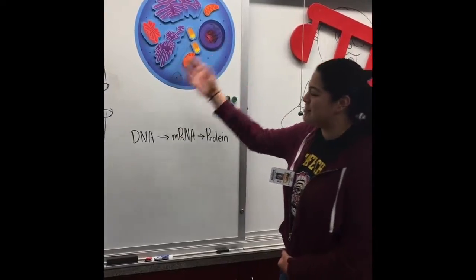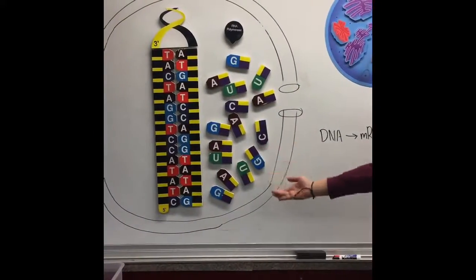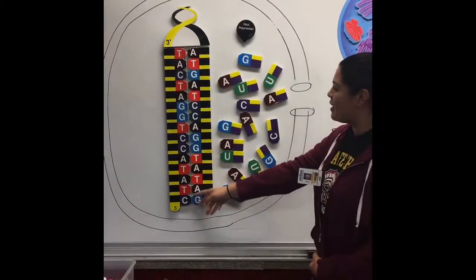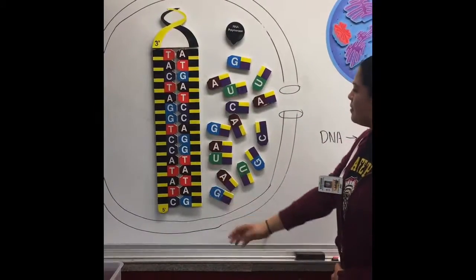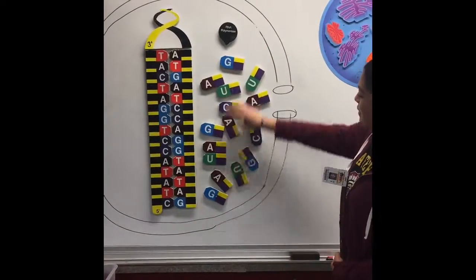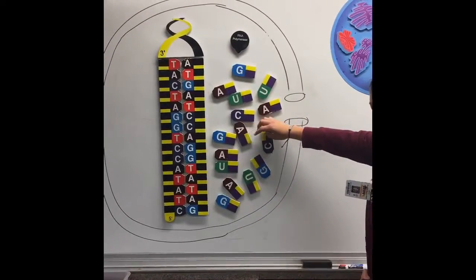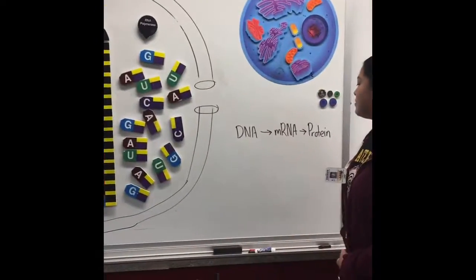This is the nucleus and this is here in a bigger form. These are two strands of DNA and this right here is making it a double helix. And all these things right here are nucleotides and they're being used to make mRNA.